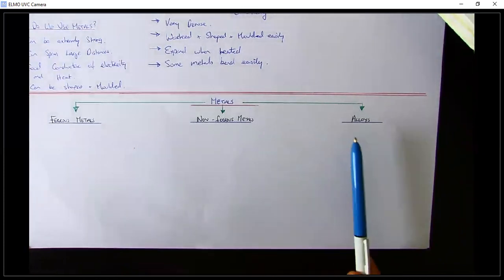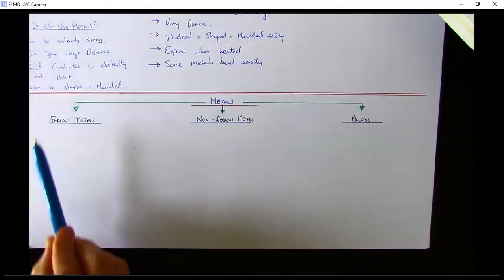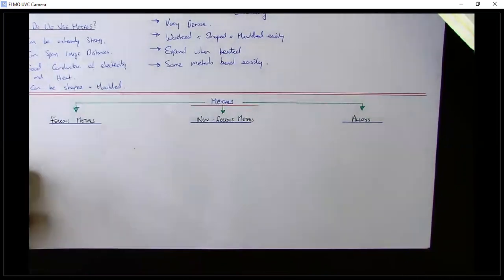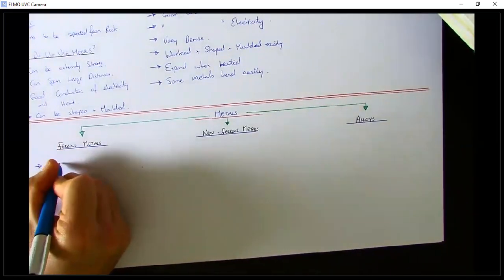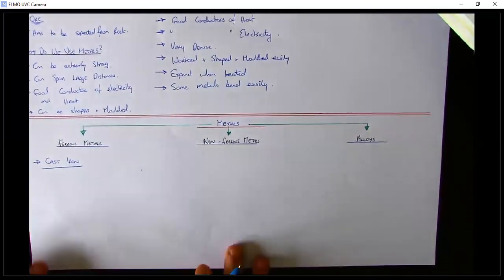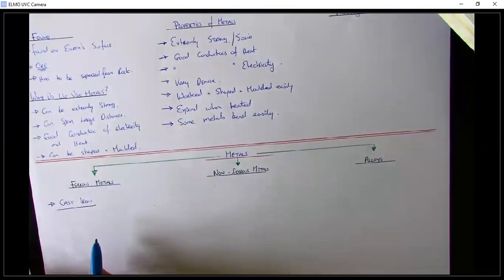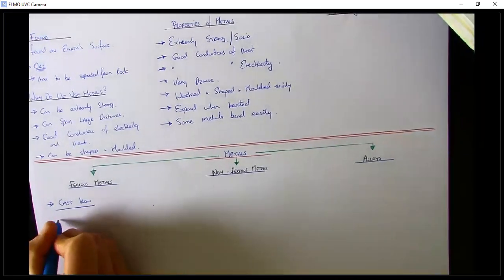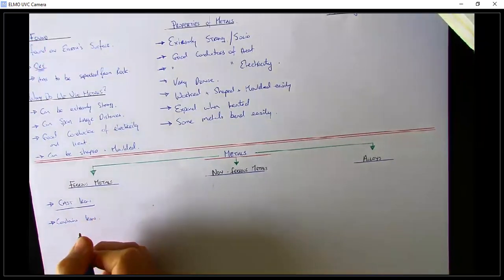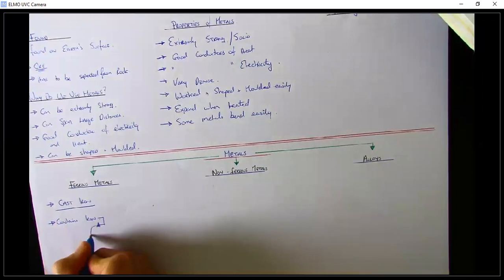The next thing is the three categories of metals: ferrous metals, non-ferrous metals, and alloys. Different types of metals fall under these three categories. The most common ferrous metal we're going to look at is cast iron. Cast iron is something you'll come across fairly often — especially if you see gates or railings that look fifty or sixty years old, most of the time they're cast iron. They're very strong and very durable. Cast iron contains iron, which is ored and processed in a furnace.